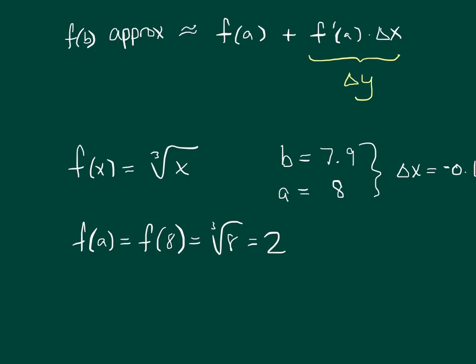f prime of x is the derivative of x to the 1 third, which is 1 third x to the minus 2 thirds. Perhaps more conveniently written as 1 over 3 times the cube root of x squared.